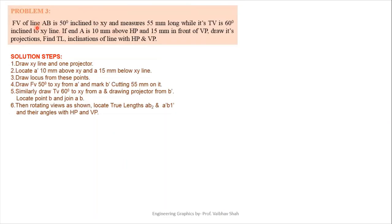Problem 3: Front view of line AB is 50 degrees inclined to XY and measures 55 mm long. Its top view is 60 degrees inclined to XY. End point A is 10 mm above HP and 15 mm in front of VP. Draw projections and find true length, inclination with HP and VP. Alpha = 50 degrees, front view length = 55 mm, beta = 60 degrees. Solve point example first, then locate true length and true inclination with HP and VP.